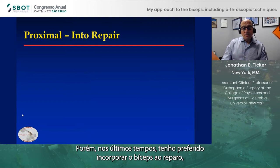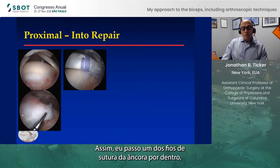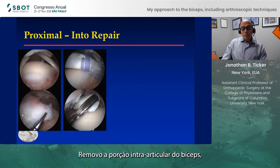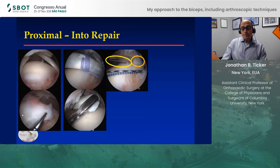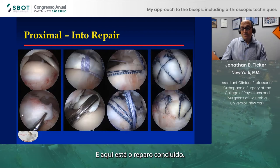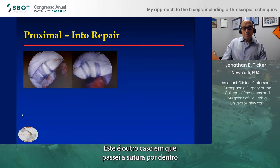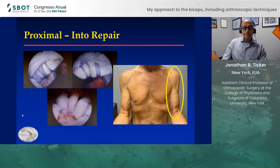More recently, I favor incorporating the biceps into the repair, which I picked up from Butch Krishnan a number of years ago. This is a right shoulder where I'm not able to fully reduce the posterior superior tear, so the biceps will be exposed. I pass one of the anchor sutures through, around, and through the biceps tendon and then through the overlying soft tissue. I'll remove the intraarticular portion of the biceps and continue passing sutures through the cuff. Additional anchors are placed, and this is the completed repair — here is the suture that incorporates the biceps. Here's another case where I've incorporated the biceps a number of times into the repair, and this is the patient who just came in last week with a good outcome.